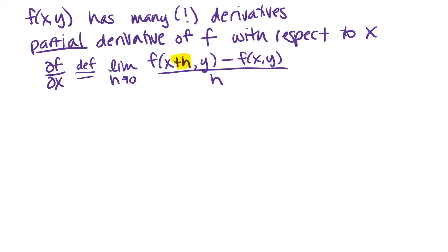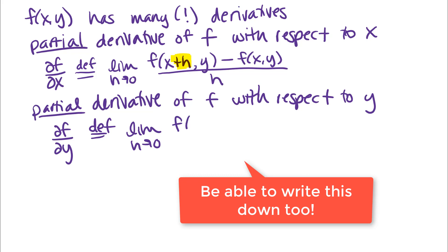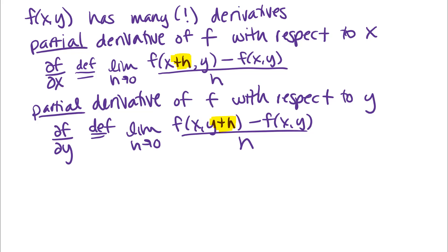We'll look at some graphs in a little bit to understand what this represents. We can also define a partial derivative of f with respect to y — del f del y — and the definition is almost the same except we'll have the plus h on the y part. So those are two of the kinds of derivatives that a multivariable function would have. Of course, if you had a function of x, y, and z, you could extend this idea and do the partial derivative with respect to z — you would add the plus h to the z part of the function.